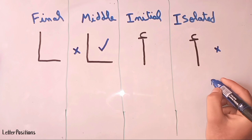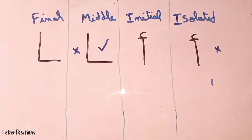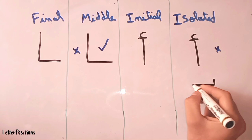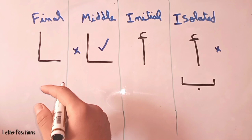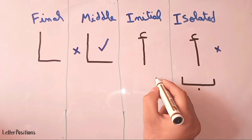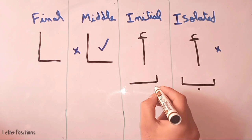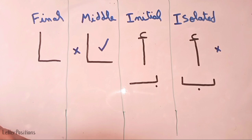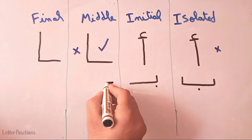Now let's move to the next letter, which is harfu al-ba'. This is the shape of harfu al-ba'. In the initial form of the letter al-ba', we start from here, turn, go straight, and put a dot underneath the letter. This is the form of the letter al-ba' in the initial form. In the middle form,